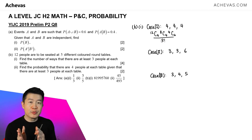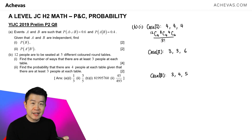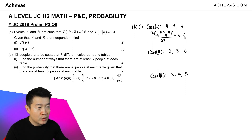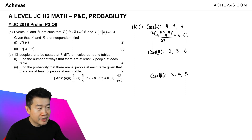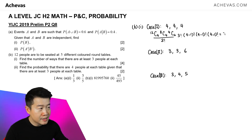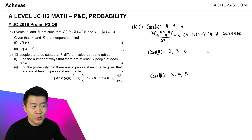Now we have 3 groups of 4, and we assign them to the 3 different colored tables, so we multiply by 3 factorial. At each table, the people are arranged in a circle, so for the first table it is (4−1)! and similarly (4−1)! for the second and third tables — circular permutations. Calculating this gives us 7,484,400.